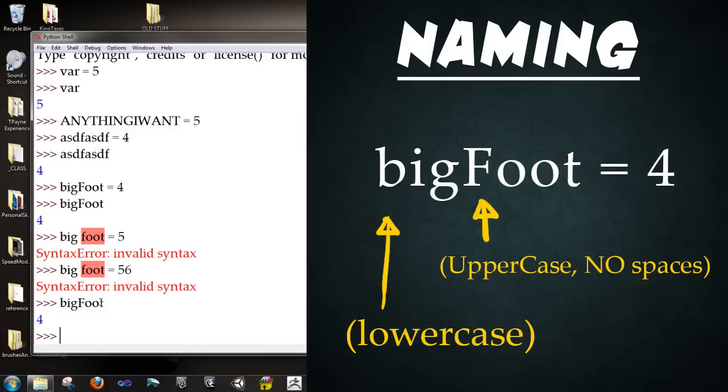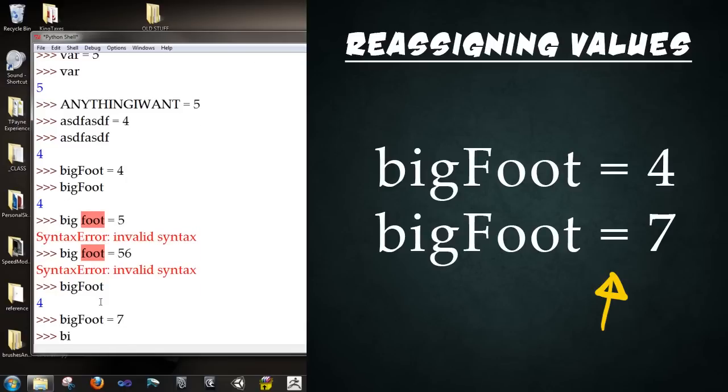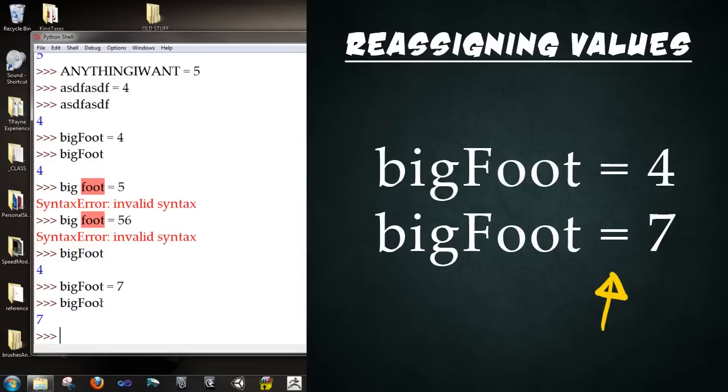So we know that we can assign values with the equal sign. Now we can also reassign values with the equal sign. So I'm going to go ahead and say bigFoot is equal to 7. And I'm going to type bigFoot again. Go ahead and try that yourself. Type in bigFoot is equal to 7. And then type it again. And you'll see that the value is reassigned. Alright.